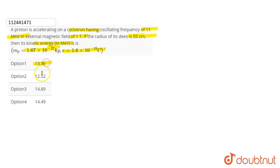Option 1 is 13.36, option 2 is 12.52, option 3 is 14.89 and option 4 is 14.49. Here we will find out what we need to find: kinetic energy in a cyclotron. Accelerating proton, frequency of 11 megahertz, magnetic field of 1 tesla, radius of D is 55 cm given.